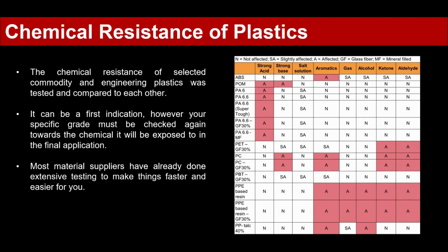Let's have a look at the chemical resistance of plastics. In the table on the right you can see selected, most-used engineering plastics: ABS, POM, aliphatic nylons, for example. You can already see the different letter codes: N means not affected, SA is slightly affected, and A is affected.